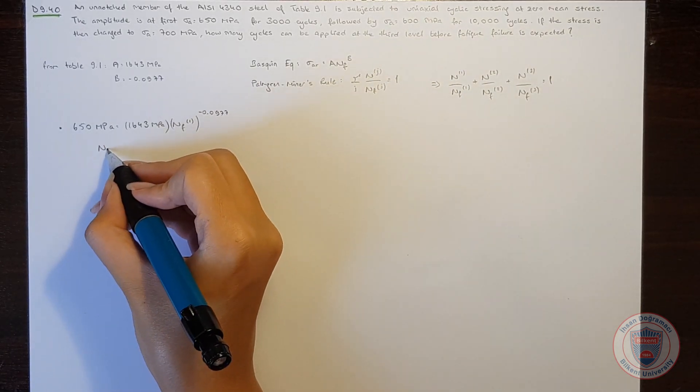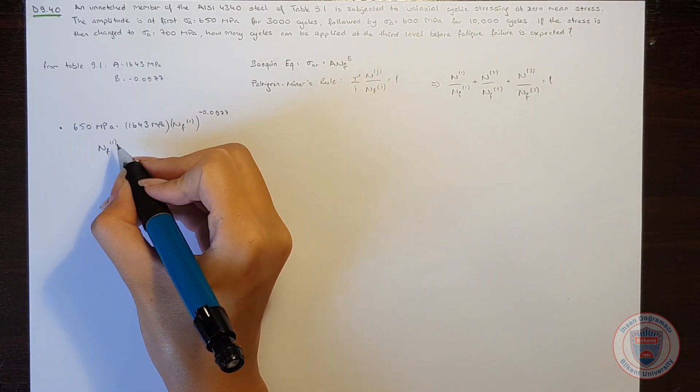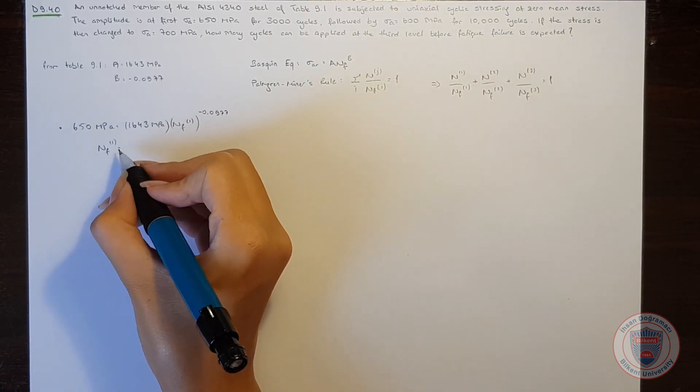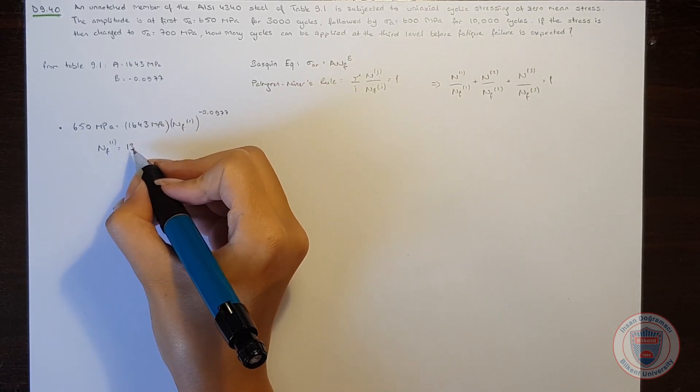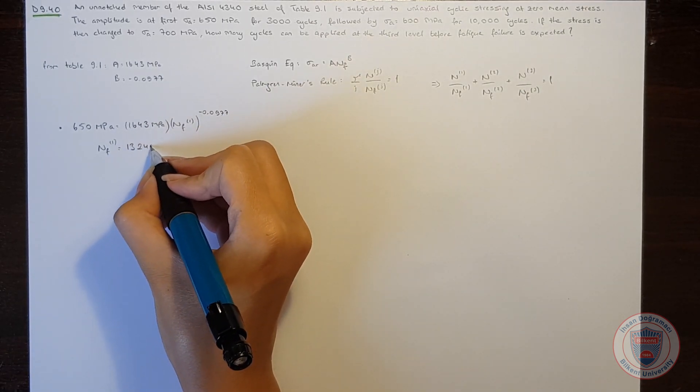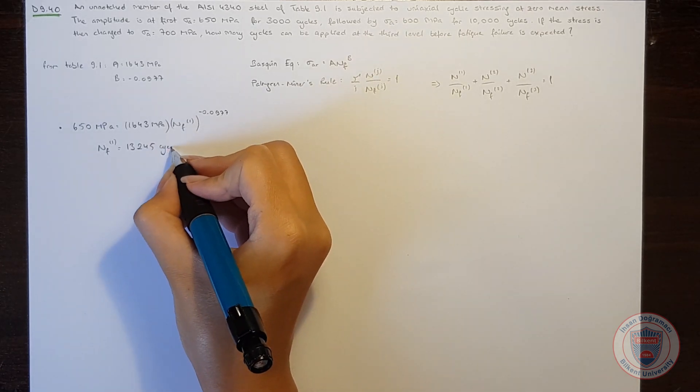So the number of cycles at the first level will be 13,245 cycles.